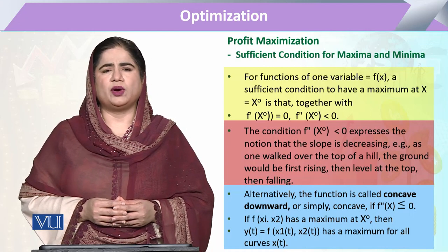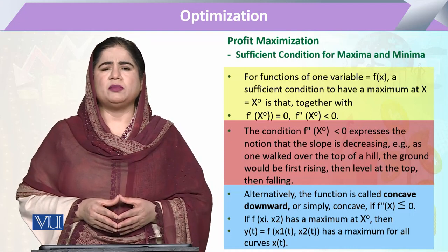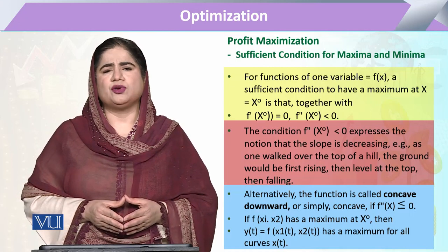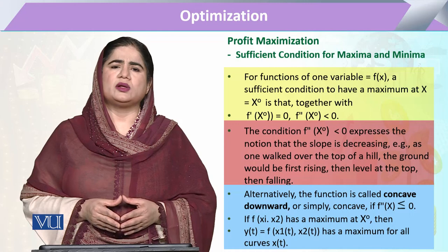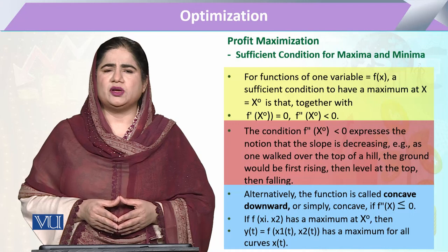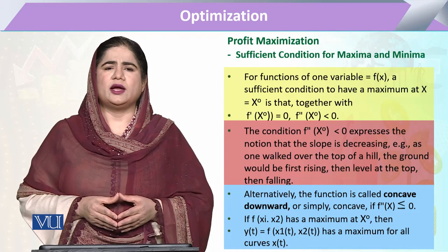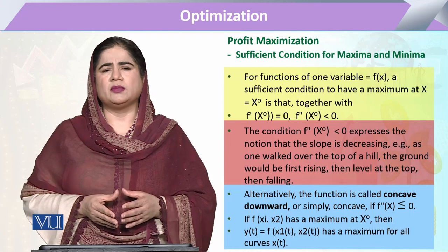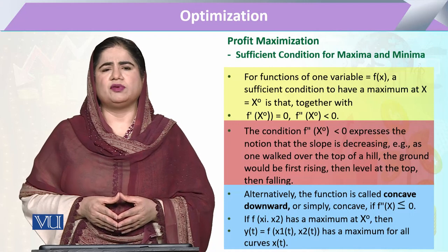Likewise, if we have to determine that the point is a minimum — meaning stationarity was reached but at the minimum — then after movement from that stationary point, if the second derivative shows a positive sign or is greater than 0, it means the change in the dependent variable due to the change in the explanatory variable is positive. So, for a maximum the second derivative will be negative, and for a minimum point the second derivative will be positive.